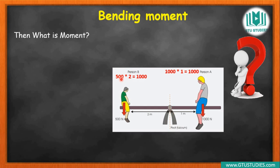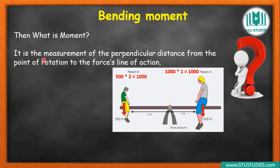On the seesaw, the force (weight) acting, multiplied by distance from the pivot, gives us the moment. So we can write the definition: moment is the perpendicular distance from the point — from the pivot — to the line of action of the force. About a pivot, the line of action of the forces, and the perpendicular distance between the pivot and the line of action — that perpendicular distance to the force's line of action.